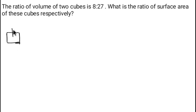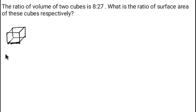First, what is a cube? A cube is a three-dimensional solid body which has equal faces — equal length, equal breadth, and equal height. So length, breadth, and height are the same. Any solid body with equal sides and equal faces is called a cube.